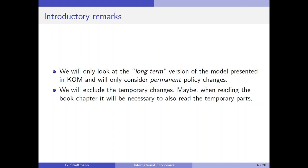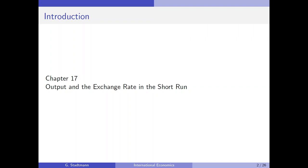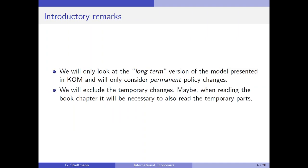We will exclude temporary changes in the lecture, but when you read this book chapter it may be necessary to also read the temporary parts so that in the end you understand the permanent policy changes. To some extent this is already a paradox: chapter 17 says output and the exchange rate in the short run, but it seems there is also a long-term version of this model. Therefore I departed a little bit from the textbook.